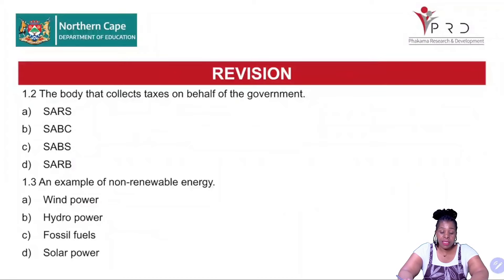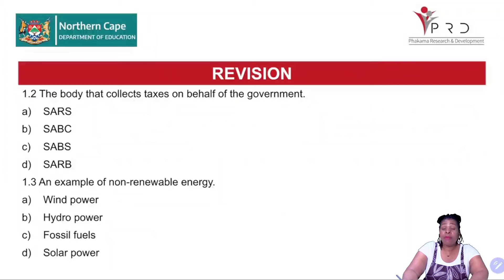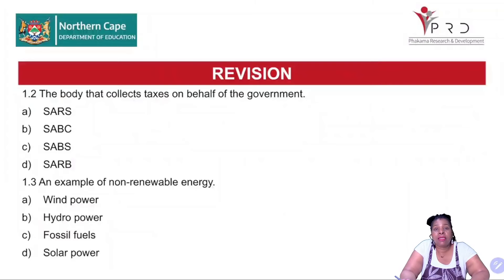Question 1.2: the body that collects taxes on behalf of the government is — A, SARS; B, SABC; C, SABS; and D, SARB. Question 1.3: an example of a non-renewable energy is — A, wind power; B, hydro power; C, fossil fuel; and D, solar power.